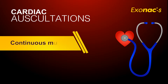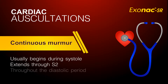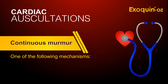Continuous murmur. A continuous murmur usually begins during systole and extends through the second sound and throughout the diastolic period. It is usually produced as a result of one of four mechanisms.